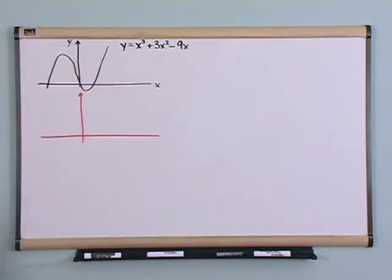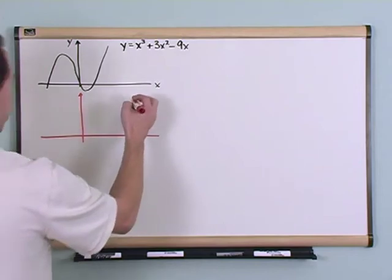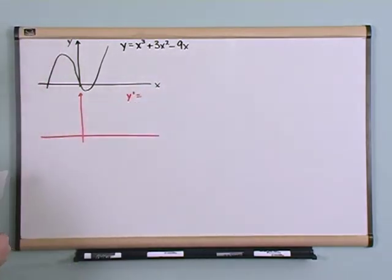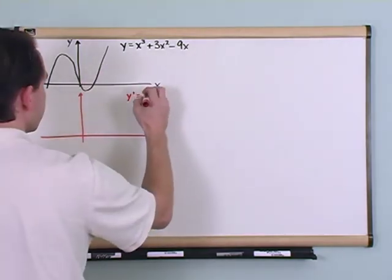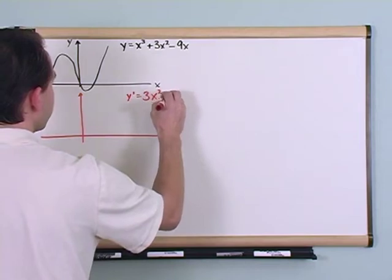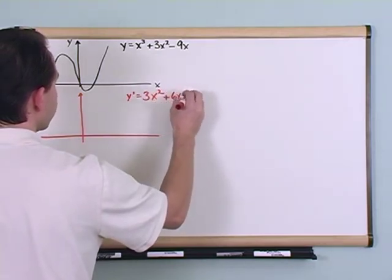Now, let's take the derivative here. The derivative of this curve, y' is the derivative, as we've been talking about. You should be able to do this kind of really quickly now. By now, we've done so many of those. Three x squared plus six x minus nine.